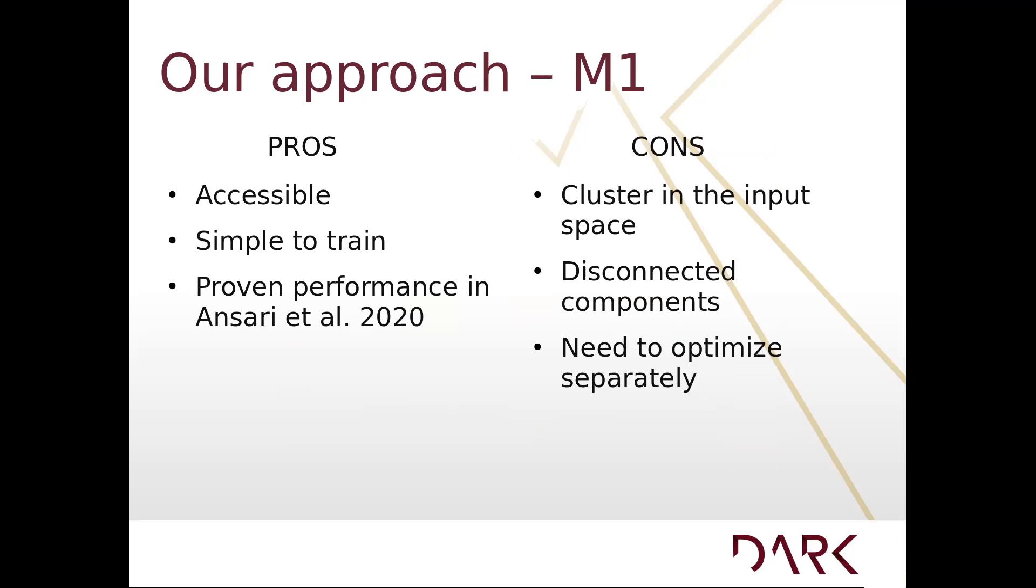The pros of this model are that it's accessible, simple to train, and has been proven to have good performance in Ansari et al. 2020. The cons are that we cluster in the input space, we have disconnected components, and we need to optimize these separately. Regarding clustering in the input space, we essentially reproduce a lot of information in the input instead of reducing down to a more informative space. Regarding disconnected components, we have to train the infinite Gaussian mixture model first, and then train our mixture density network. This means our unsupervised models and supervised models do not necessarily inform each other.